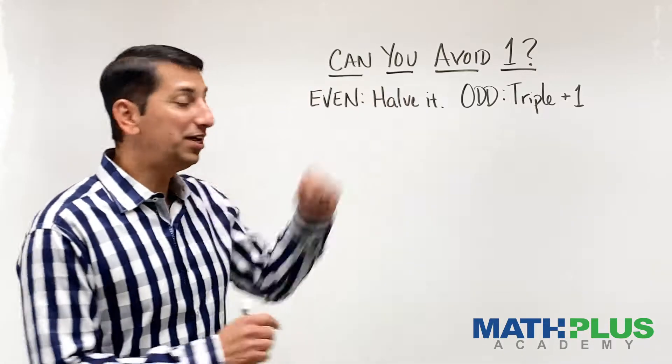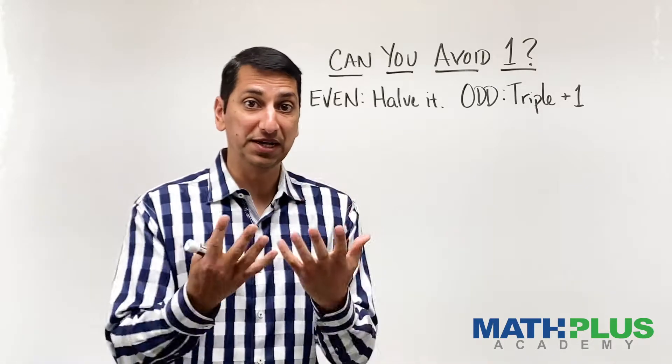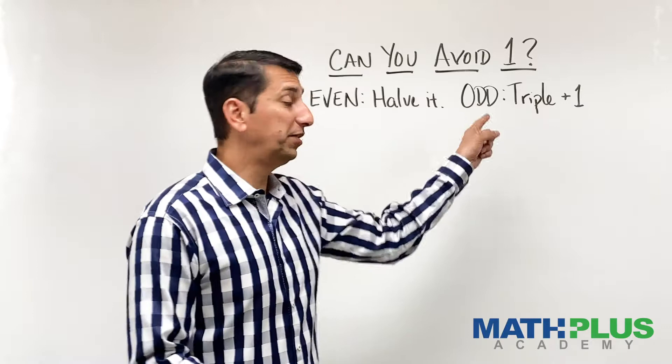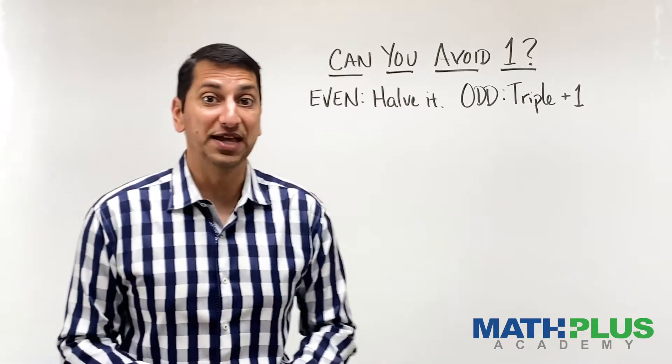You pick a number and you follow these rules right here. If the number is even, you take your number and you break it in half. If the number you started with is odd, then you triple it and add one. And then you just repeat until something interesting happens.